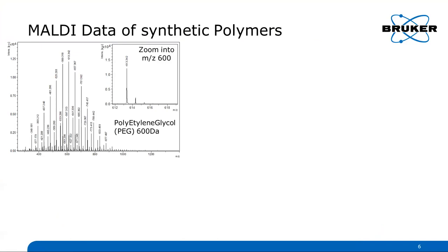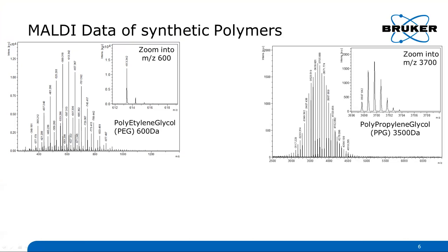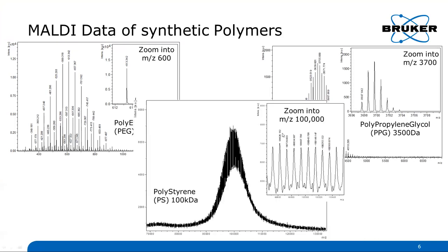The data of synthetic polymers differ strongly depending on the mass range acquired. For example, a spectrum of a polyethylene glycol at 600 Dalton shows a clear isotopic distribution of the oligomer. Going a bit higher, the isotopic distribution gets wider due to the higher number of carbon atoms — for instance, a polypropylene glycol at 3,500 Dalton. At very high masses, such as a polystyrene at 100 kilodalton, you no longer get the isotopic pattern, but you can still achieve oligomeric resolution of the single oligomers present in the polymer sample.